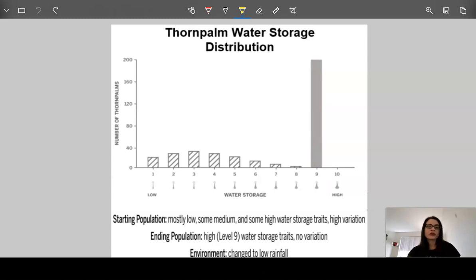Why did this happen? If we're thinking about a plant's ability to survive without water or without rainfall, they need an ability to store water somehow. What happened is, when the environment changed to low rainfall,